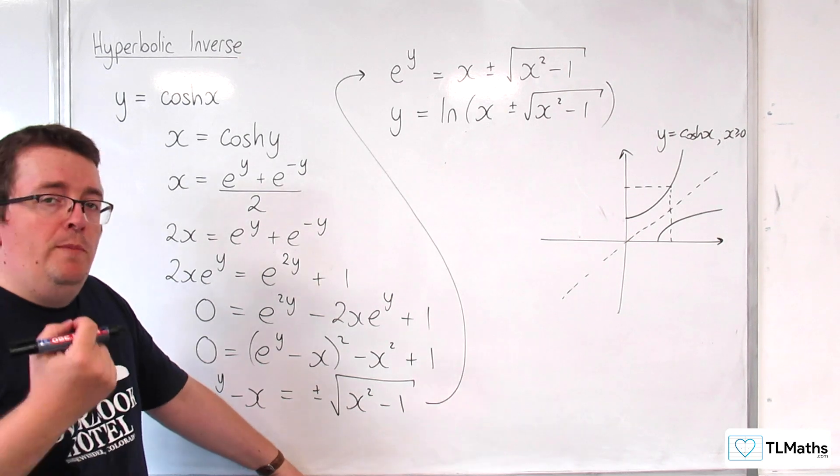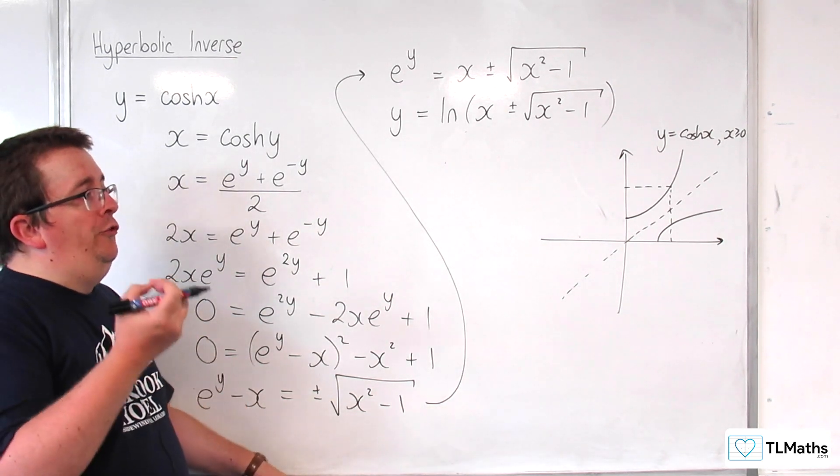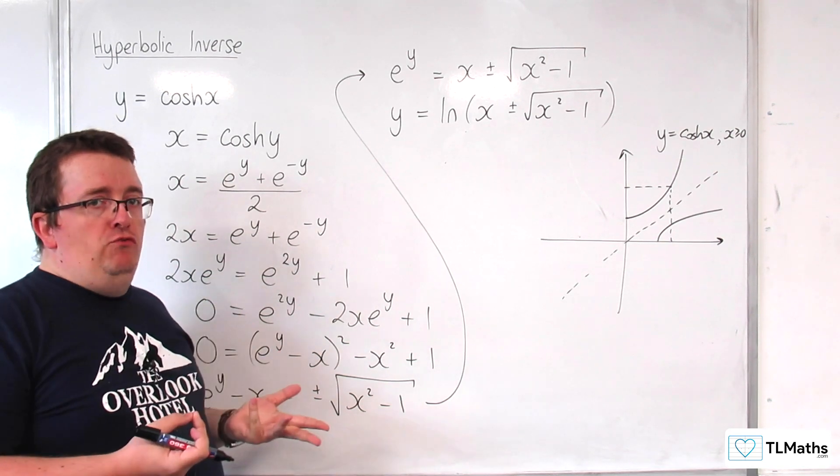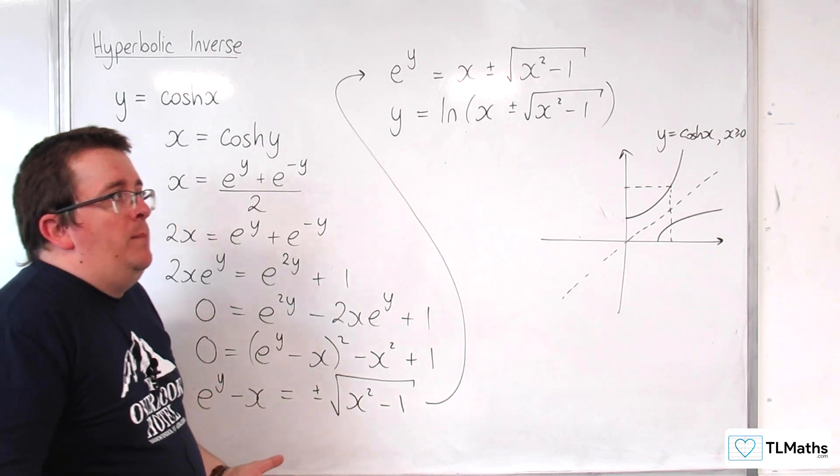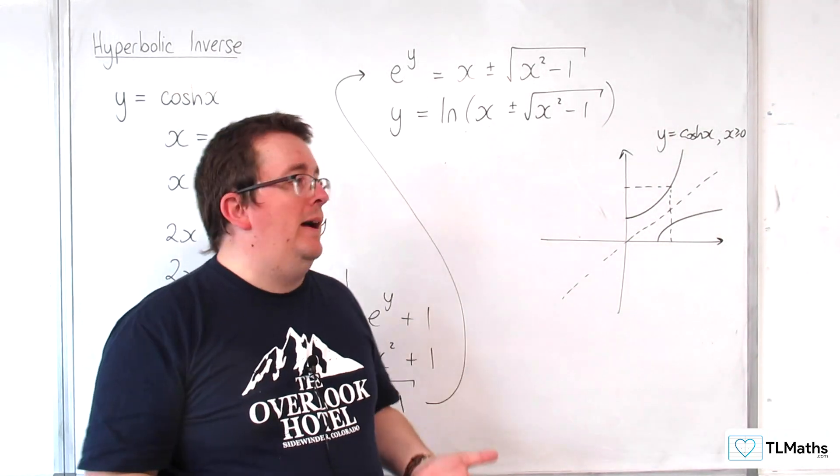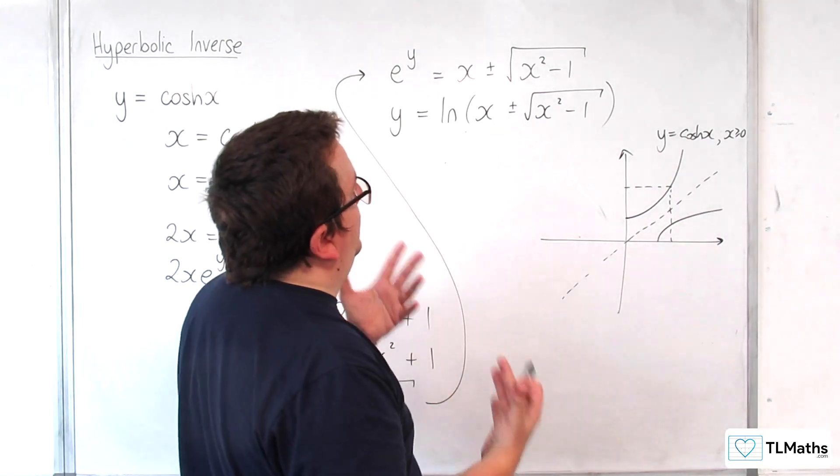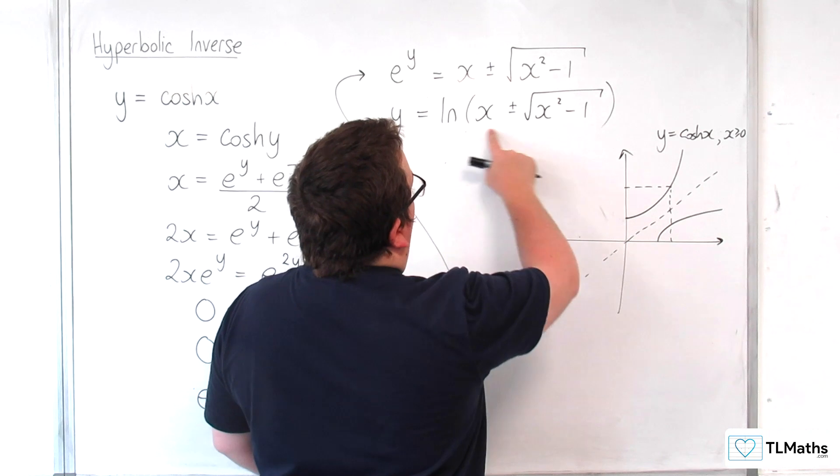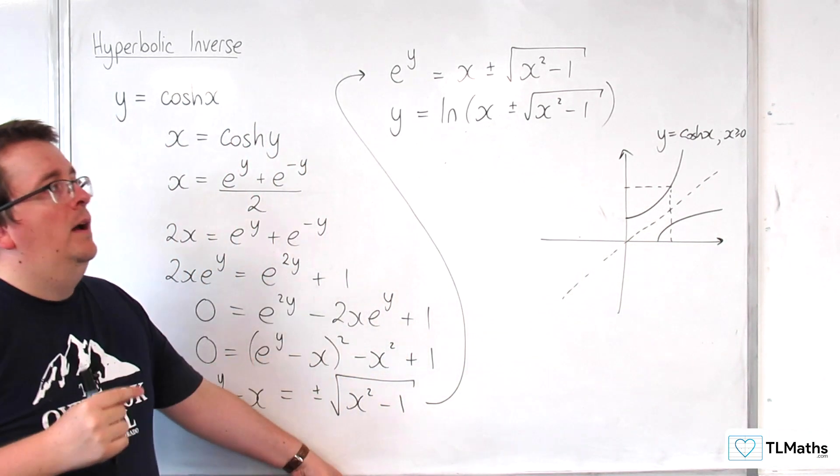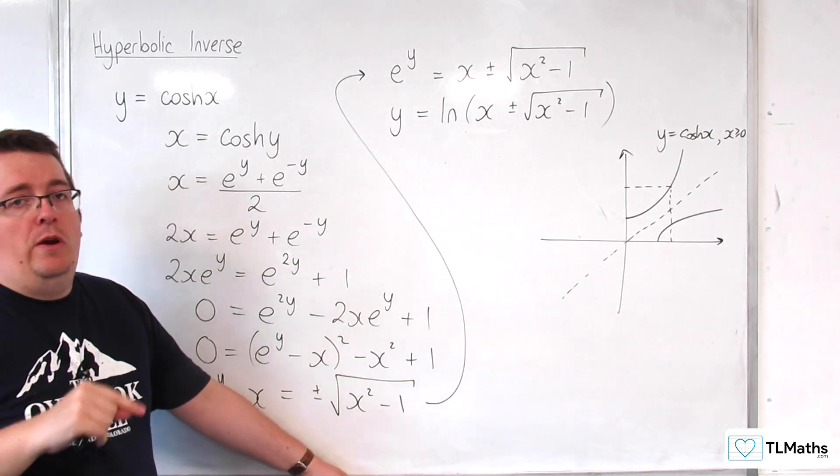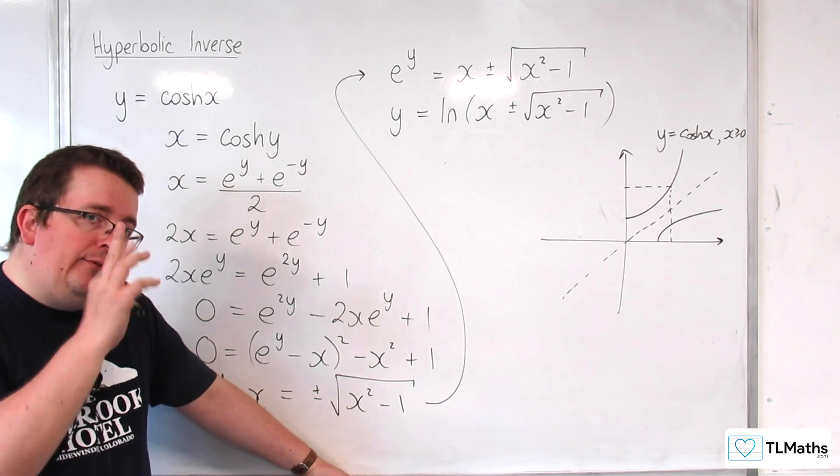So, we get this, and from the previous video, when we were solving cosh of x is equal to 4, we found that the two results that you get are the negatives of one another, and they had to be because y equals cosh x is symmetric about the y-axis. So, what that's telling us is that log of x plus the square root of x squared take away 1, and log of x take away the square root of x squared take away 1, they are the positive and negatives of one another.